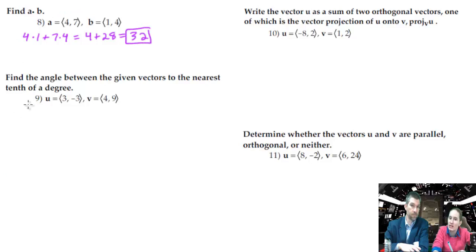How about number 9? We need to find the angle between the given vectors to the nearest tenth of a degree. There's a formula for doing that. I sense an inverse trig function in our future. That tends to be the case whenever you have an angle that you want to find. We actually have to do kind of a lot of work for this.